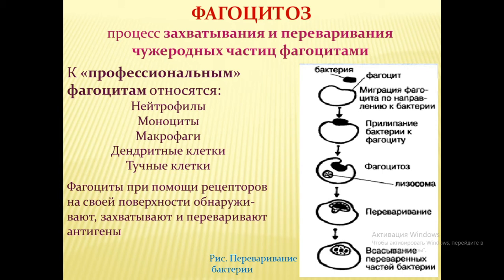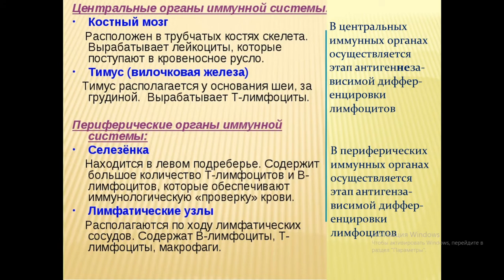Схема фагоцитоза — это тип врождённого иммунитета, который отвечает за защиту организма в первые часы заражения, то есть нападения бактерий, вирусов и так далее. Рассмотрим, где образуются и дифференцируются, то есть получают направленность, клетки иммунной системы, которые затем борются со всеми патогенами на периферии организма.